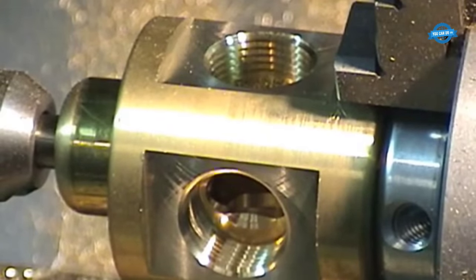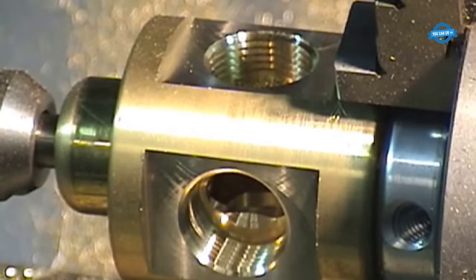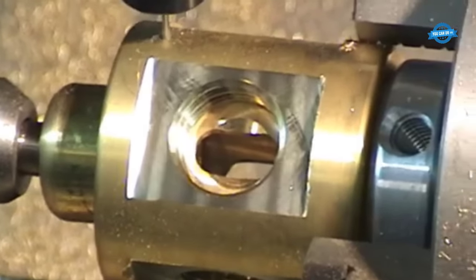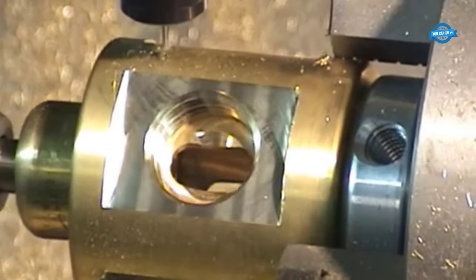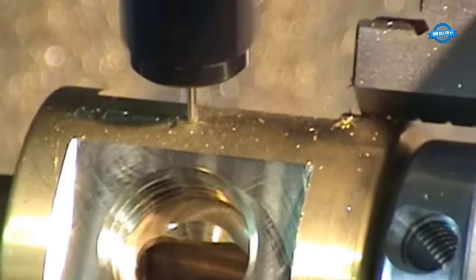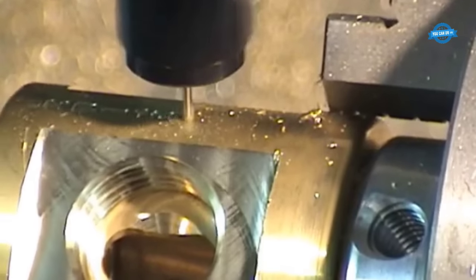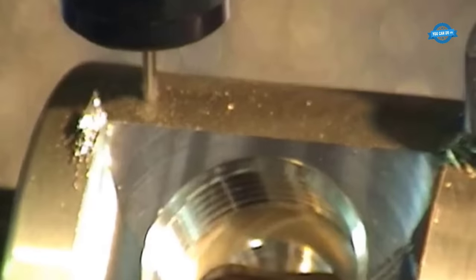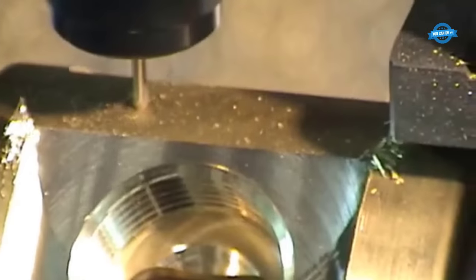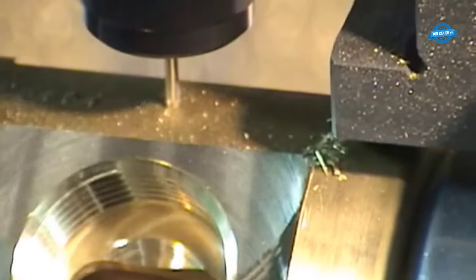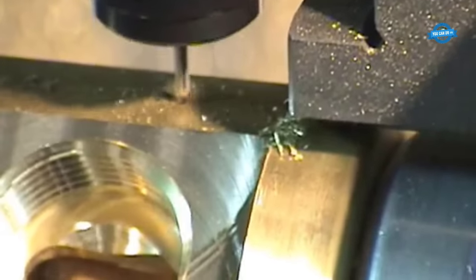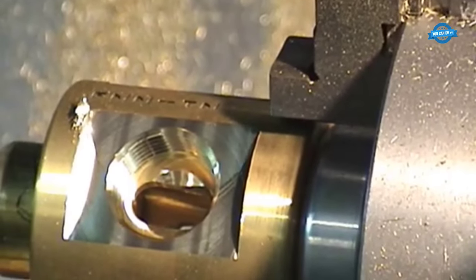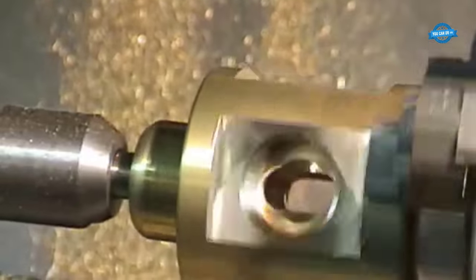Multi-axis machining allows for simultaneous tool movement along different directions, which can significantly reduce cycle times and enable machining of complex geometries. For instance, when machining intricate brass components with curved or contoured surfaces, multi-axis machining can maintain consistent tool orientation to achieve smoother finishes and eliminate unnecessary tool changes. Toolpath optimization is crucial in multi-axis machining to minimize tool motions and avoid collisions with the workpiece or machine components. Advanced CAM software can generate efficient toolpaths, taking into account the machine's kinematics and ensuring smooth tool transitions.